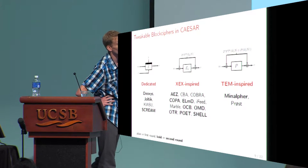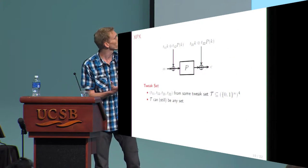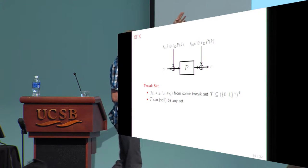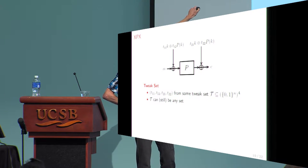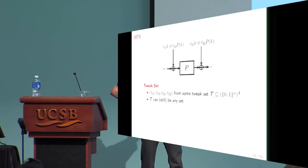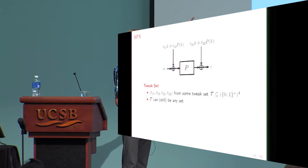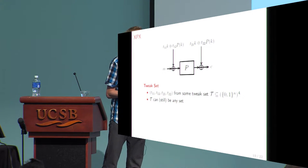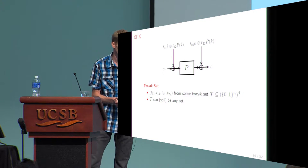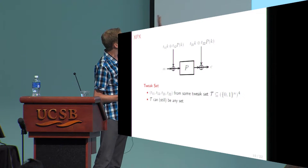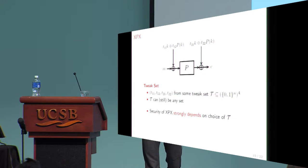In this work, we consider permutation-based design — we effectively generalize the tweakable Even-Mansour approach. More specifically, we consider XPX. XPX is a public permutation in the middle, masked on the left by T11 times k XOR T12 times P(k), and on the right by T21 times k XOR T22 times P(k). The tweak is of the form (T11, T12, T21, T22) from a pre-described tweak set T, which depends on the use case. The security of XPX strongly depends on the choice of the tweak set.